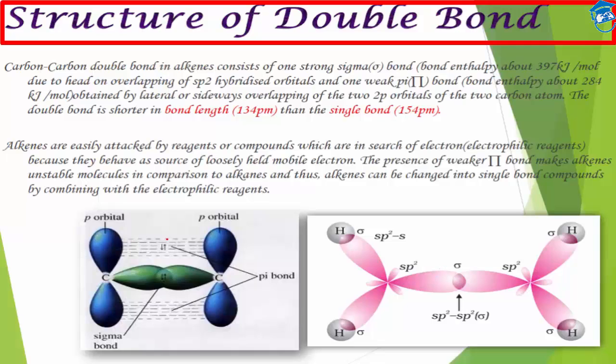If we compare alkene and alkane, alkane has only sigma bonds, whereas in alkenes between two carbon atoms there is one sigma bond plus a pi bond. Obviously, when there are two bonds, the two carbon atoms will be brought closer to each other, so the bond length of the double bond should be shorter compared to the single bond. The bond length of carbon-carbon in alkene is around 134 picometers, whereas the bond length of carbon-carbon in alkane is around 154 picometers.